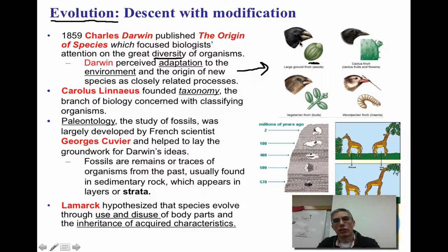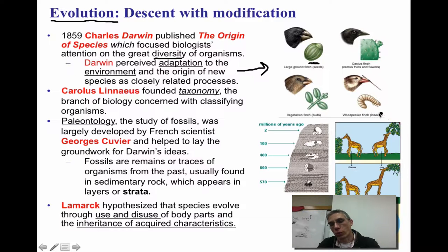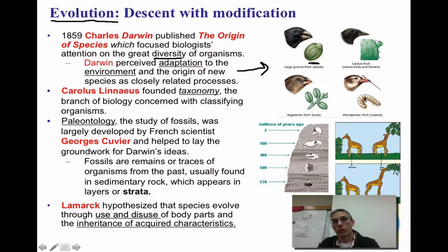This finch here has a very large beak because the particular area it lives in only has very large, very tough seeds. Only those birds with very large beaks were able to crack these seeds and use them as food. Down here in the lower right-hand corner is a woodpecker finch that can actually use a tool to take insects out of trees. The beaks for these two birds are very different, and they've adapted based on the environment they're found in.